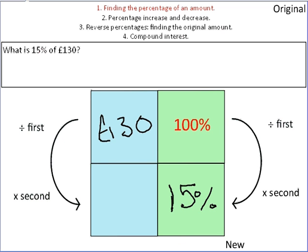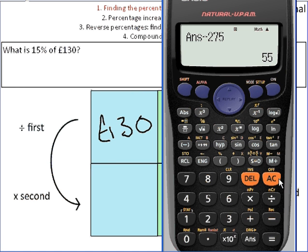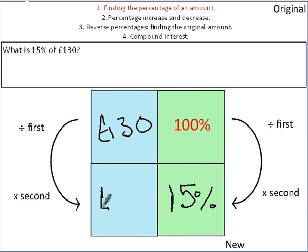So get your calculator. So let's clear the screen. We're going to take our 130 pounds, divide it by 100 and then times it by 15. If a fraction comes up, we just press the SD button to get it to a decimal form. And we've got 19.5. That's going to be 19 pounds and 50 pence. Done.